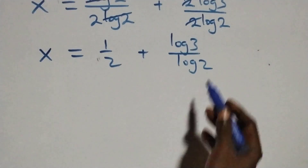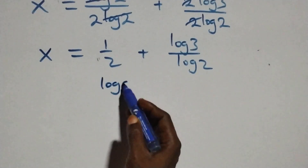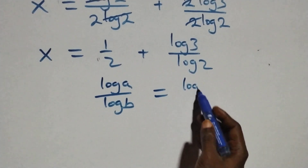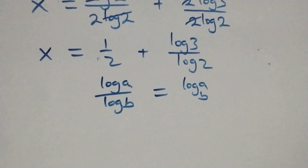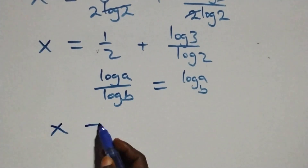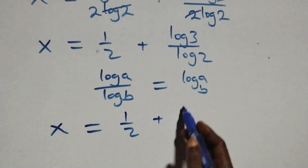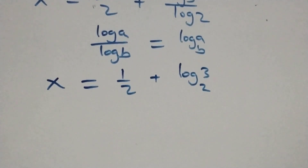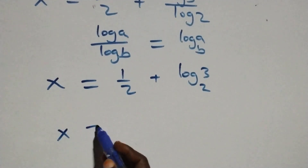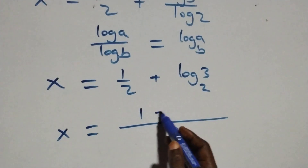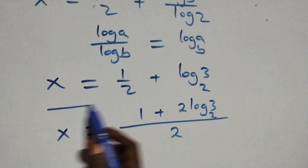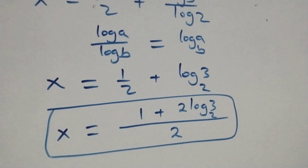The next step here, we apply the change of base: when we have log a over log b, this is the same thing as log a to base b. So this becomes x equals 1 over 2 plus log 3 base 2. Bringing this together as one fraction, we have x equals 1 plus 2·log₂3, all over 2.